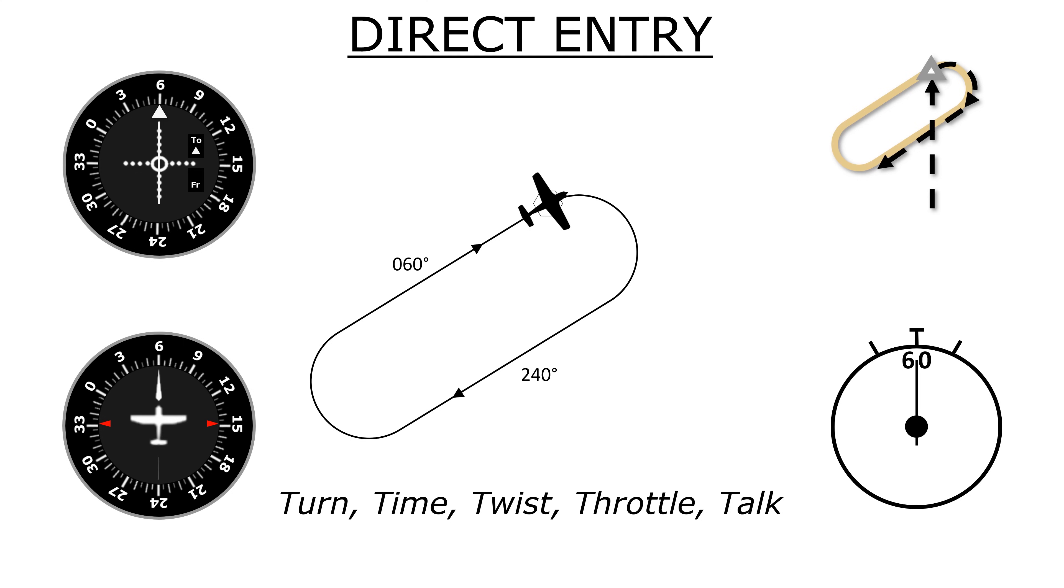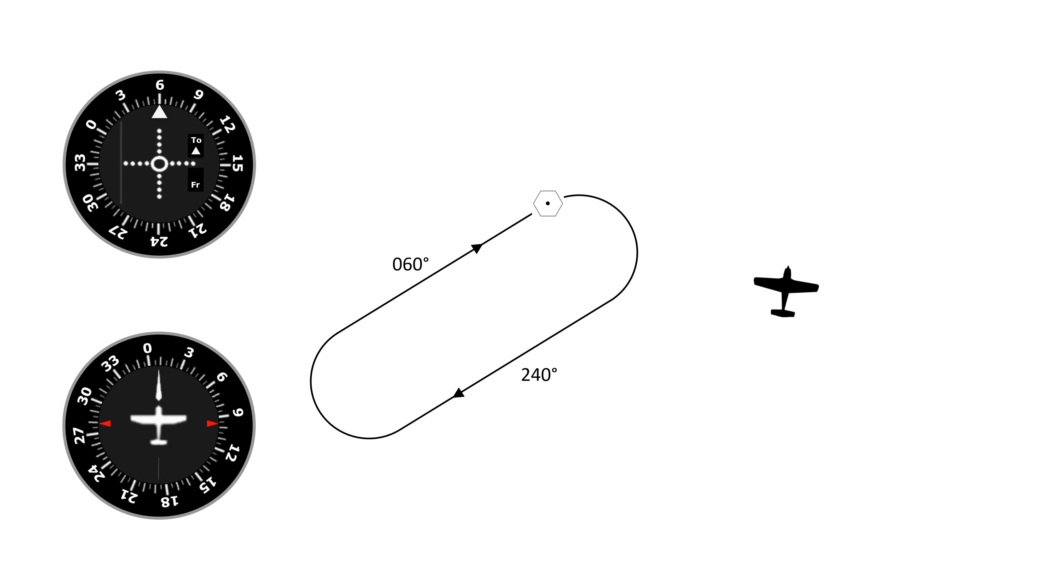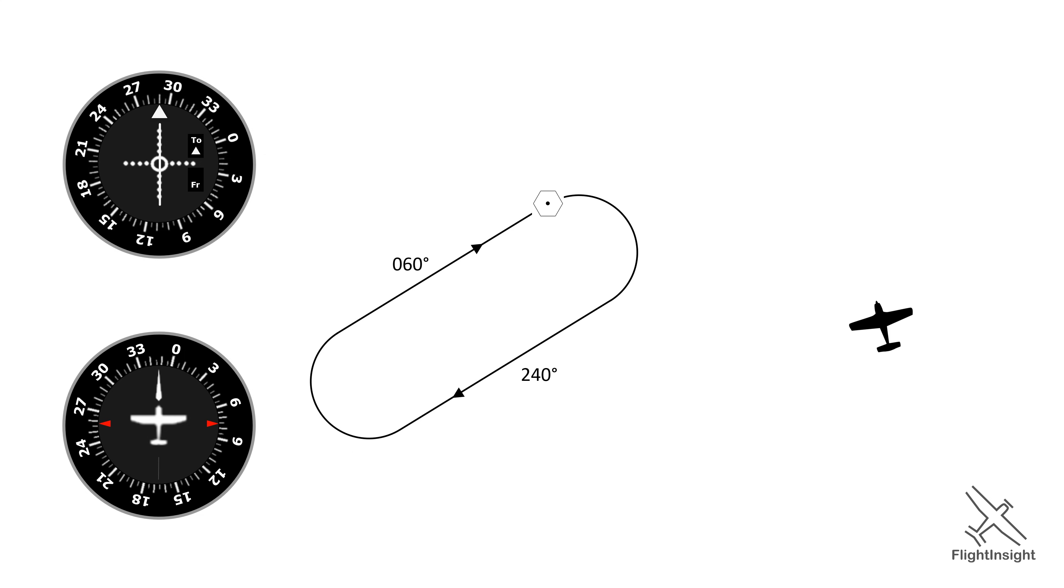So that's the direct entry. Now let's say we find ourselves in a different position initially when instructed to join the same hold. Once again, we'll start with determining the inbound heading by turning the VOR until the needle centers and we get the TO indication.